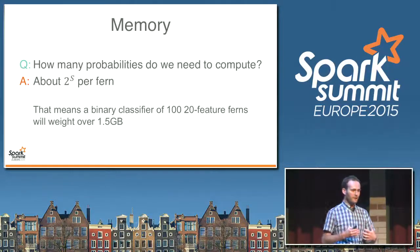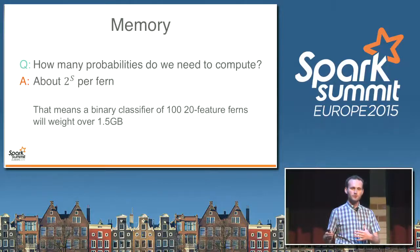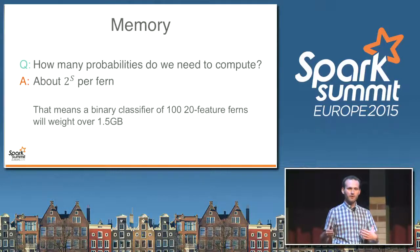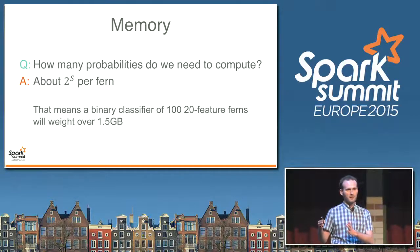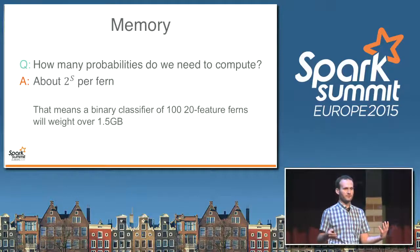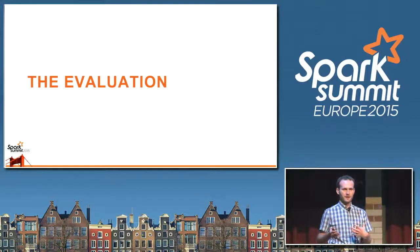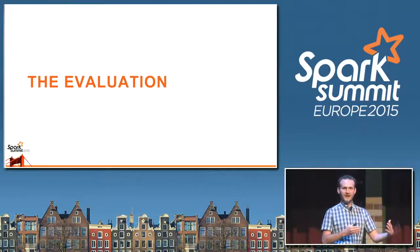The only warning I need to give is about memory usage. As there are many probabilities we need to store, the memory we require grows exponentially with the number of features we take into account in one fern. But it's a kind of trade-off — as you want to model more complex relationships between features, you require more memory. What's more, memory gets cheaper, as we know from previous talks today. So that's good. But it would be a shame to talk about a new algorithm during this Big Data Conference without providing any data about its performance.